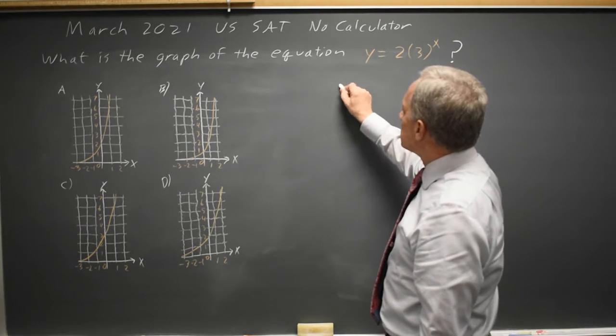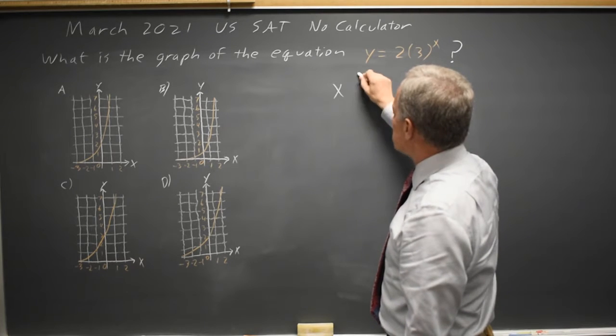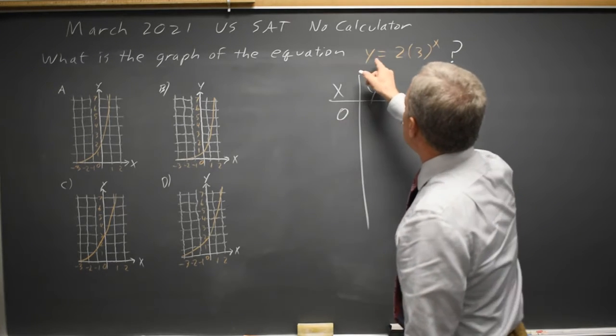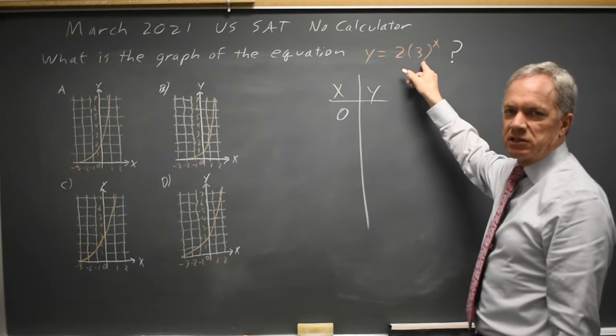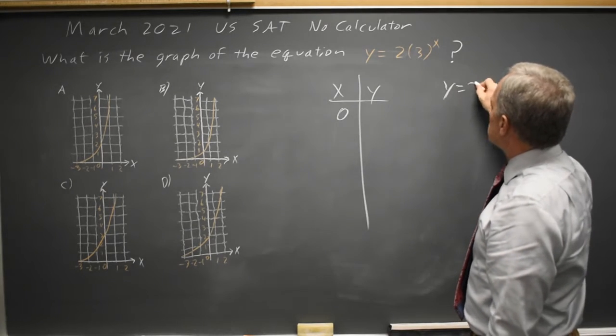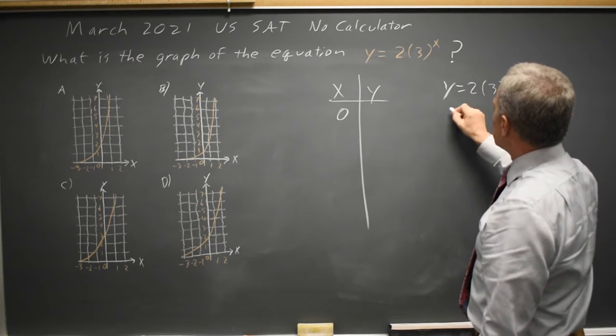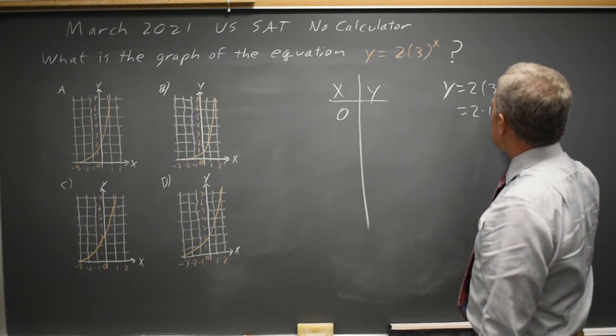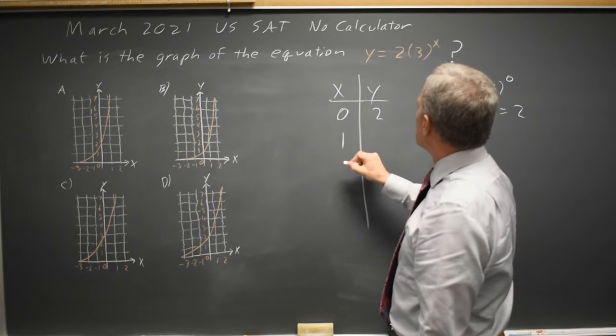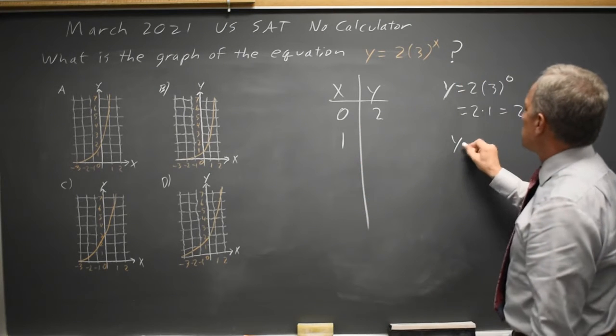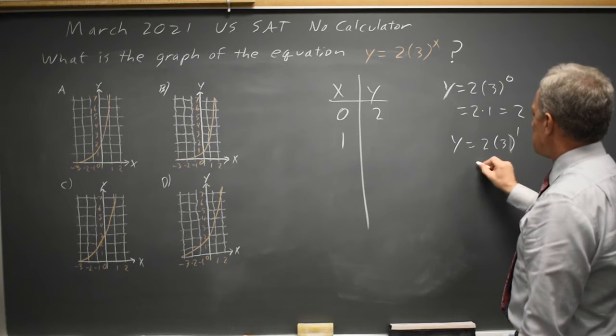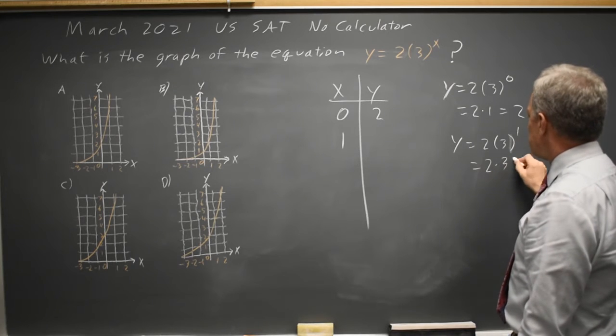The easiest way to match here is to make a table of values. When x is 0, y is 2 times 3 to the 0. Anything to the 0 is 1, so that's 2 times 1, which is 2. And when x equals 1, y equals 2 times 3 to the 1, which is 2 times 3 equals 6.